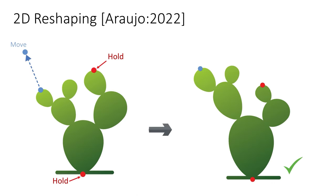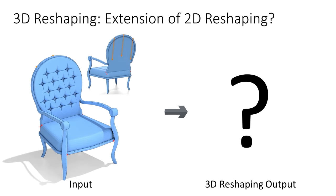Last year, Araujo and colleagues proposed a method for reshaping 2D curved networks. Their method produces promising results but targets only 2D content. A potential approach to 3D reshaping is to extend this method to 3D surfaces.